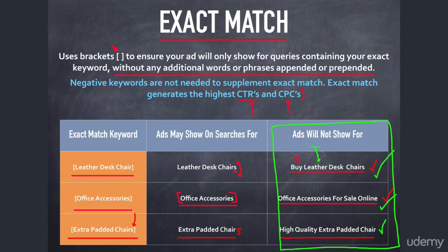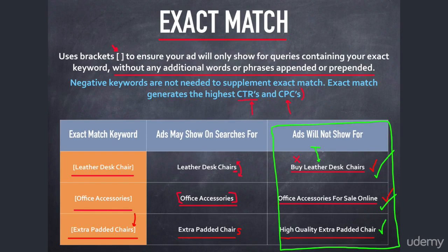So this is excellent progress. We've covered broad match, broad match modified, phrase match, exact match, and negative keyword match types using the negative sign. Now that we understand what they do and how they operate, let's dive into an actual account, continue building, and spend more time on advanced topics — looking at live accounts and getting a real feel for the AdWords dashboard. Thanks, and I'll talk to you soon in the next video.